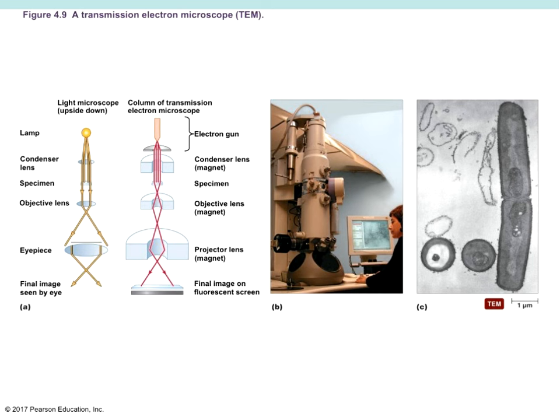To use an electron microscope, the specimen typically has to be killed — that's different from a light microscope where we can look at living objects. To get that short wavelength to bounce off the specimen, we have to stain with heavy metals like silver and mercury, which typically kills the specimen. For transmission electron microscopes, preparations may also require slicing the specimen into very thin layers to view internal structures.